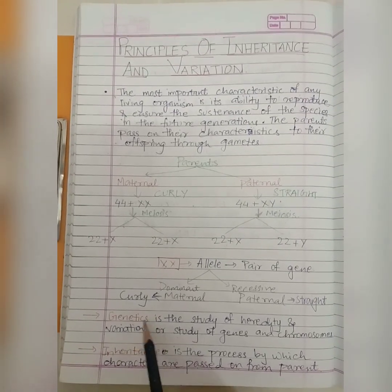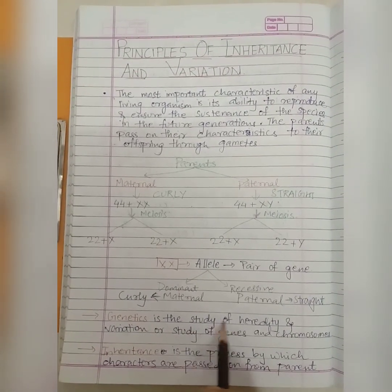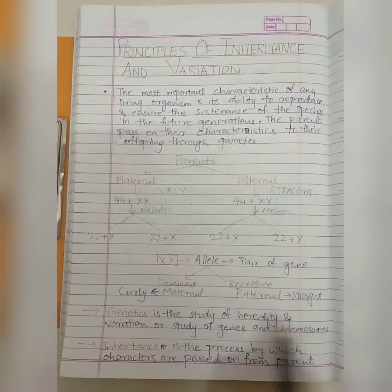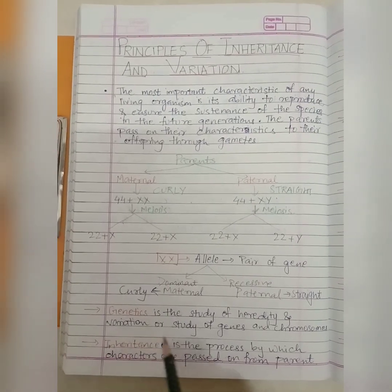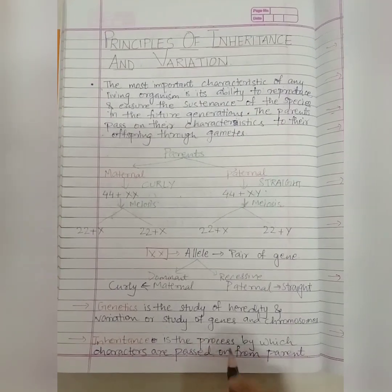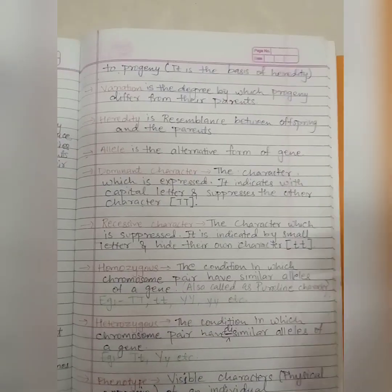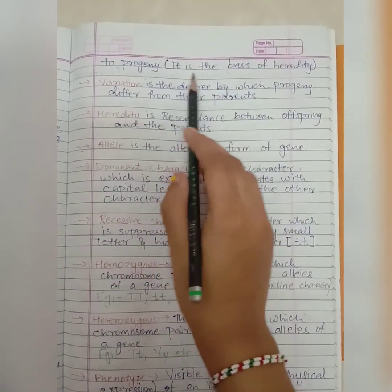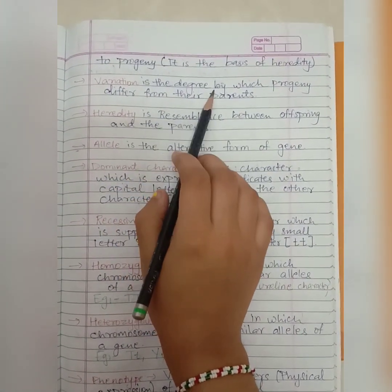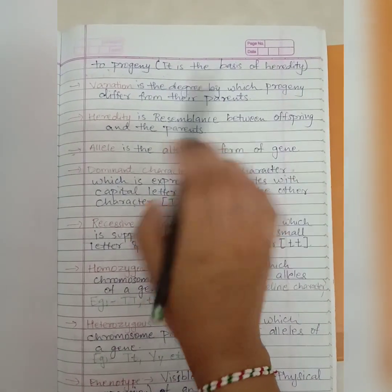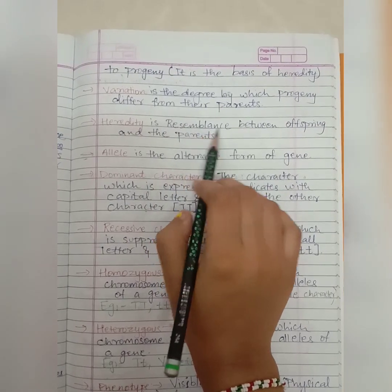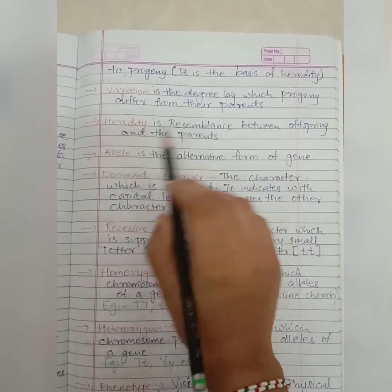Let us look at some important terms. Genetics is the study of heredity and variation, or the study of genes and chromosomes. Inheritance is the process by which characters are passed from parents to the progeny — it is the basis of heredity. Variation is the degree by which progeny differs from their parents. Heredity is the resemblance between offspring and parents.